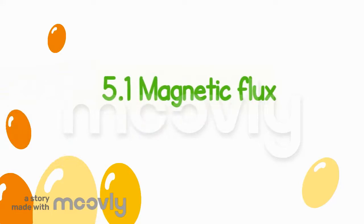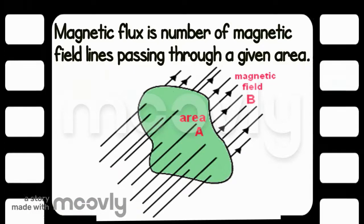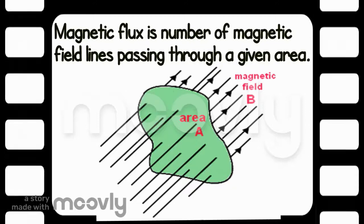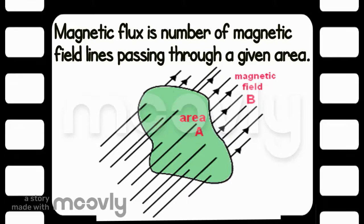So what is Magnetic Flux? Magnetic Flux is the number of magnetic field lines that is passing through a given area. Basically, the more the number of magnetic field lines and the bigger the area, the greater the magnetic flux.